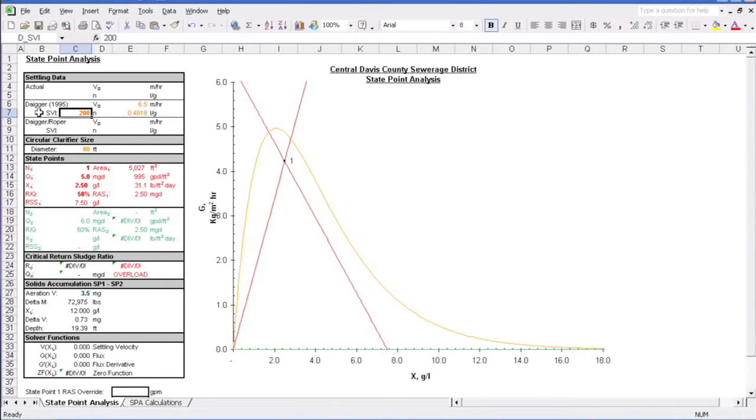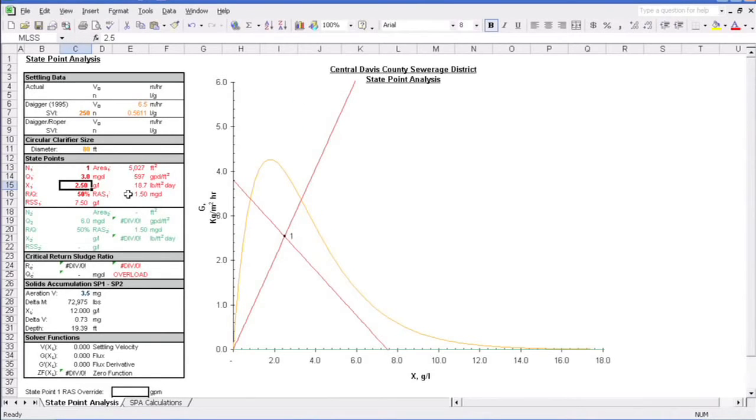Let's go back to our nice, properly functioning clarifier. The SVI is back to 250, the flow is 3MGD with a RAS running at 50% or 1.5MGD, and this time let's say that we've wasted some and our mixed liquor concentration has dropped to 2000 milligrams per liter or 2 grams per liter. We are way under the curve both in the state point and the underflow rate line. Life is good, right?